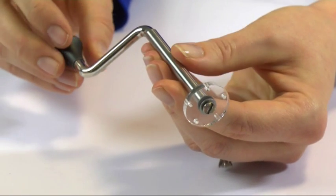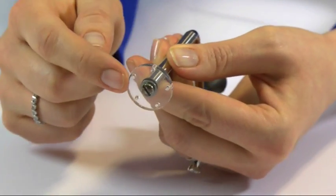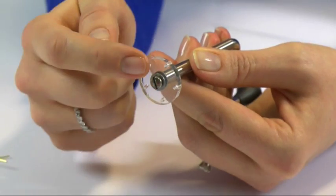So this is the wire twister tool and it's essentially a crank handle with a Perspex disc at the end with five holes drilled in it.